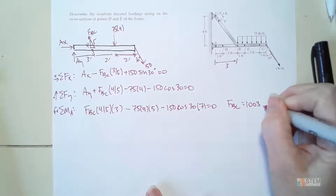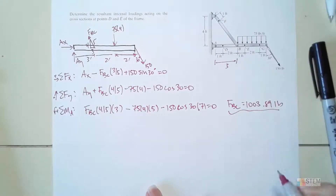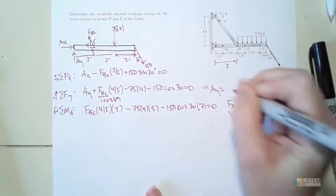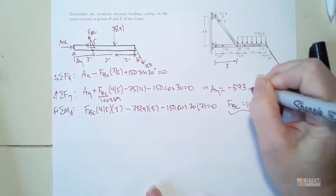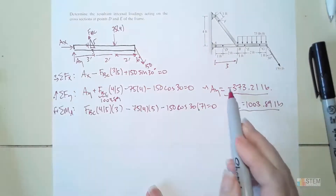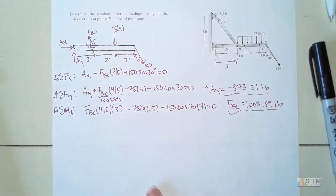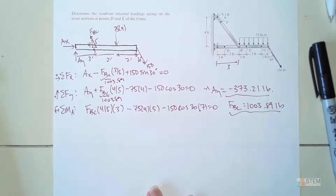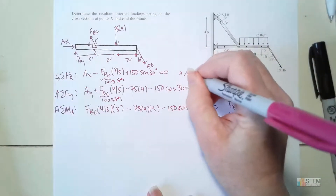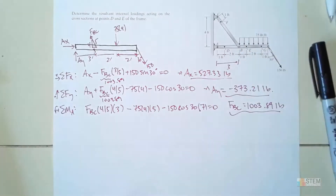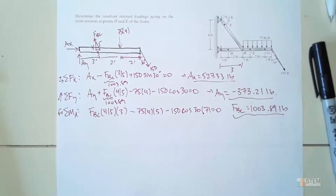So FBC equals 1003.89 pounds. Plugging that in, AY equals negative 373.21 pounds — the negative sign just means I chose the wrong direction, but it's still correct relative to the diagram. Then plugging in to the X equation, AX equals 527.33 pounds. So now we've got the external loads and we can work on finding the internal loadings.